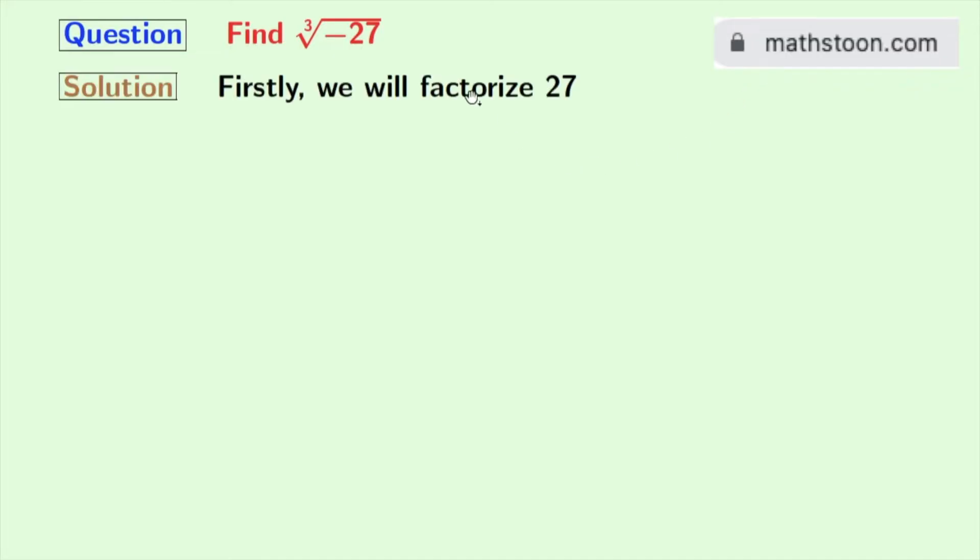At first, we will factorize 27. We know that 27 equals 3 times 9, and 9 equals 3 times 3.